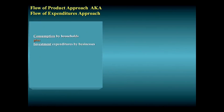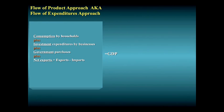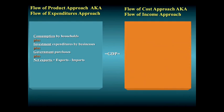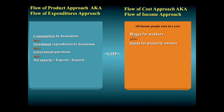With the flow of product or expenditures approach, GDP equals consumption plus investment plus government expenditures plus net exports, where net exports are defined as the difference between total imports and total exports. In contrast, the flow of cost or income approach adds up all the income people receive each year from producing the year's output — roughly equal to wages earned by workers, plus rents earned by property owners, plus interest received by lenders, plus profits earned by firms.